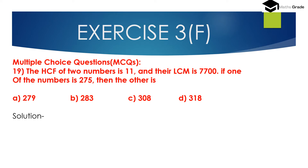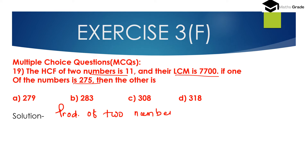Question number 19, MCQ: The HCF (Highest Common Factor) of 2 numbers is 11 and their LCM (Least Common Multiple) is 7700. If one of the numbers is 275, then the other number is — options are given. We know that the product of HCF and LCM equals the product of the two numbers.